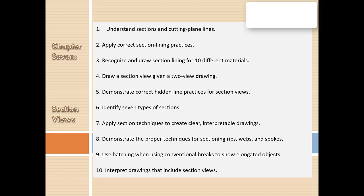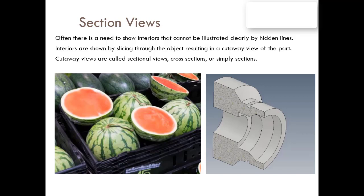First of all, why do we need section views? Simply to see the object from inside. As an example, look at this watermelon — from the outside you cannot tell the shape inside, you cannot tell if it is red or ready to be eaten.